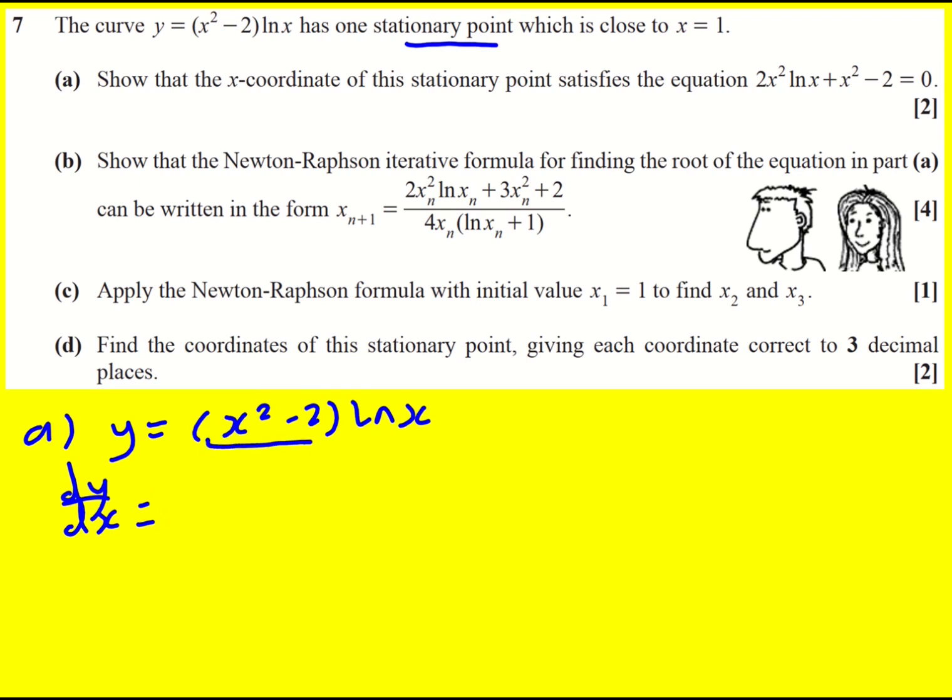For this we can use the product rule. This is u, this is v. u dash is going to be 2x, v dash is going to be 1 over x. So we've got 2x times ln x plus x squared minus 2 times 1 over x, which I can just write all divided by x here, and that is going to equal zero for stationary points.